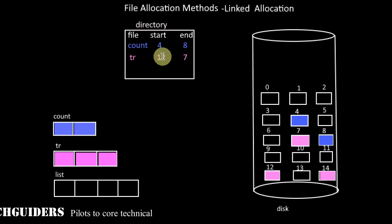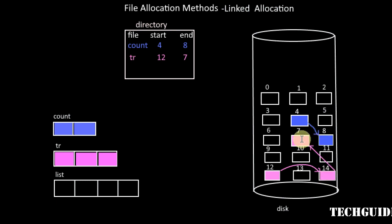Thus the directory entry contains a pointer to the first block of the file. From there on, each block contains a pointer to the next block of the file. And the last block will contain a null pointer indicating the end of the file.